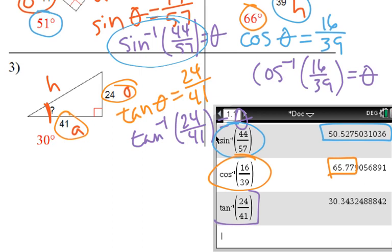And lastly, tangent, type it in just like we had it, 30.3, so we keep it rounded to 30 degrees.